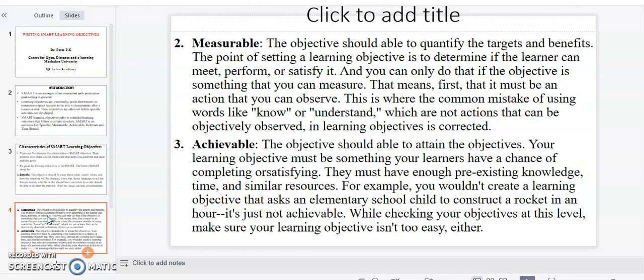Measurable: The objective should be able to quantify the targets and benefits. The point of setting a learning objective is to determine if the learner can meet, perform, or satisfy it. And you can only do that if the objective is something that you can measure. That actually means, first, that it must be an action that you can observe.